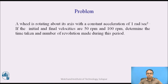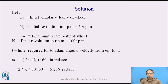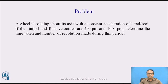Now let us solve another problem. A wheel rotating about its axis with a constant acceleration of 1 radian per second squared. If the initial and final velocities are 50 rpm and 100 rpm, determine the time taken and number of revolutions made during this period. We have to convert velocities into radian per second. Angular acceleration is 1 radian per second squared, and initial and final velocities are given in rpm.